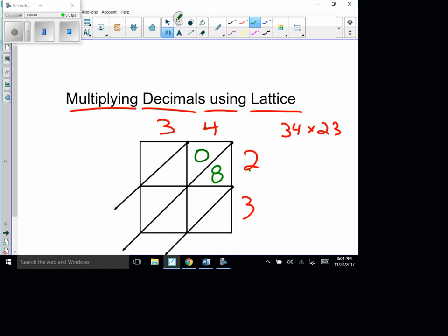So 2 times 4 is 8, remember that the top one is the tens place, the bottom one is the ones. Then 2 times 3 is 6 and 3 times 4 is 12 and then 3 times 3 is 9. Okay, and then remember how we add, we add diagonally.